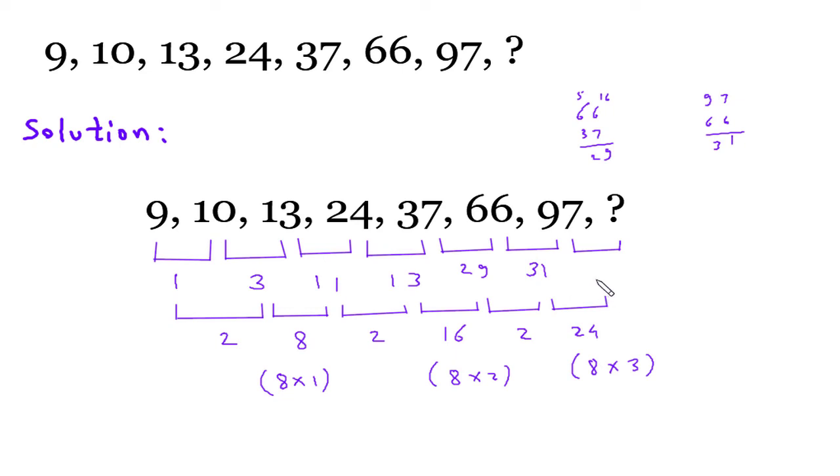And here this will be 31 plus 24, so 31 plus 24 is 55. This number is 55. Now this will be 66 plus 31 is 97, so similarly 97 plus 55.